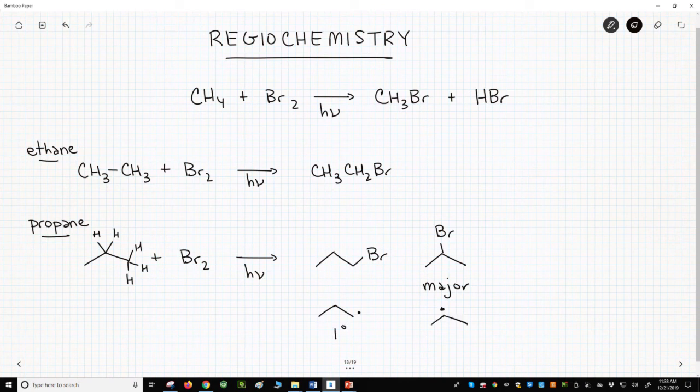2-bromopropane would form from this radical, which is a secondary radical. Secondary radicals are more stable, so we observe 2-bromopropane as the major product. Radical brominations are regioselective based on radical stability. Now that we know the basics, let's see some quick examples.